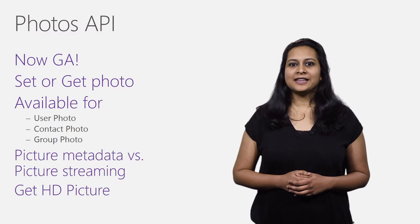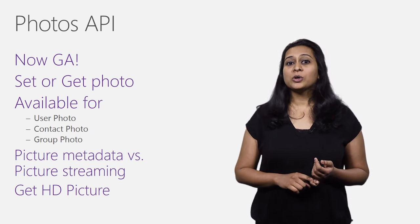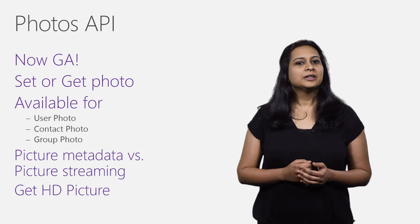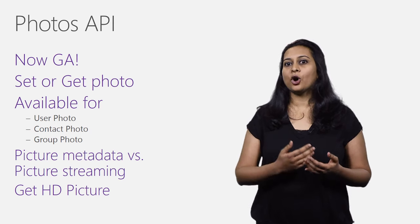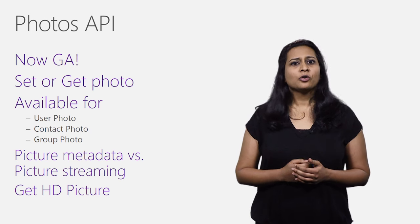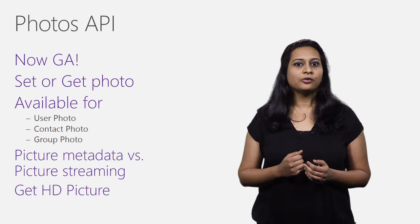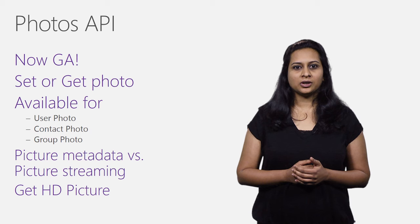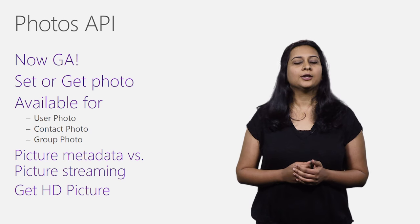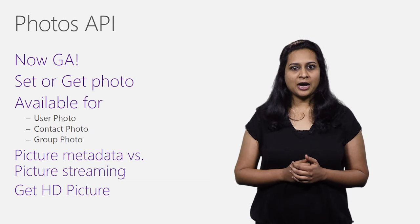The Photos API supports setting and getting of photos. There are three types of photos you can access. First is the user photo, which is the photo in the directory or the photo uploaded by the user. The second is the contact photo, associated with each of the user's contacts and uploaded by the user. The third is the group photo, which is the photo for a modern group. For each of them, the app can either get the metadata or download the actual photo by appending a dollar value to the request. If no photo is found, the API returns a 404 error.